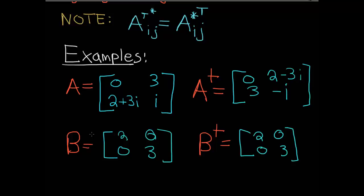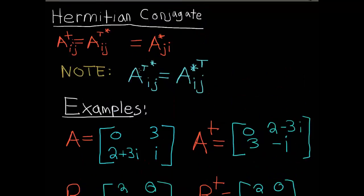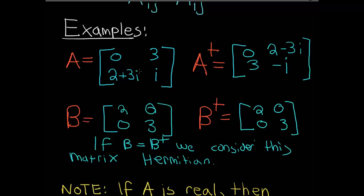This brings up a special point. If B equals B Hermitian conjugate, we consider this matrix Hermitian. So you've got the Hermitian conjugate, which is the operator defined as follows, and then you've got a Hermitian matrix, which is defined as such.